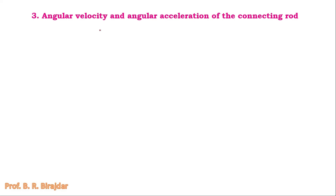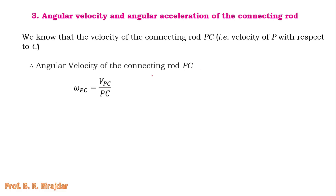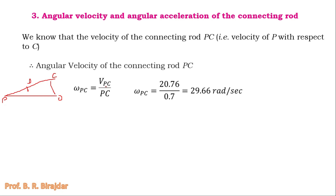Finally, we find the angular velocity and angular acceleration of the connecting rod PC. Angular velocity of connecting rod PC equals velocity of PC divided by length PC. The velocity of P with respect to C (C to M distance) is 0.173 meter, so velocity = 120 × 0.173 = 20.76 m/s, and the connecting rod length PC is 700 mm = 0.7 meter. Therefore angular velocity = 20.76 / 0.7 = 29.66 radian per second.